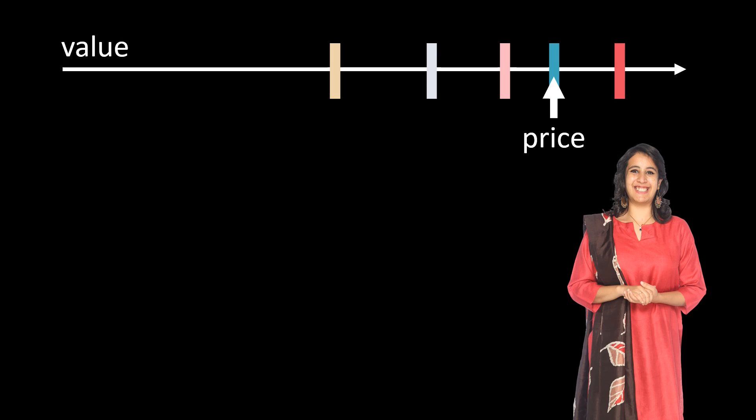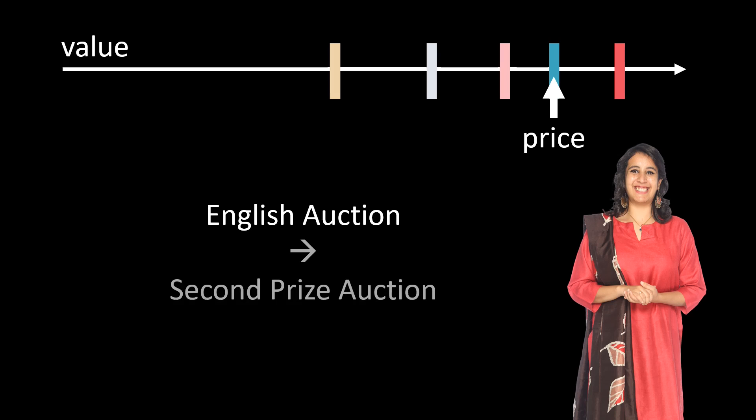The problem with the English auction is that it is slow. On the internet, millions of auctions are being executed every second. Whenever somebody searches on Google, there is an auction that determines who can display an ad and for what price. In these auctions, speed matters. But luckily, there is yet another type of auction, known as the second price auction, which is just made for these millions of small auctions.